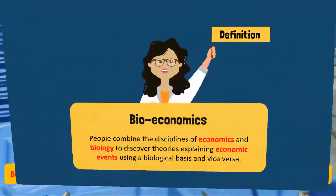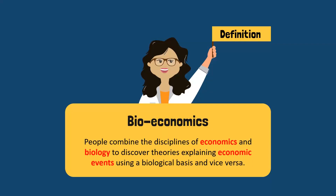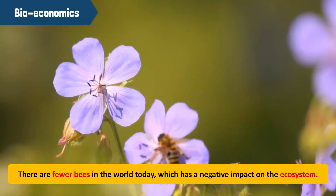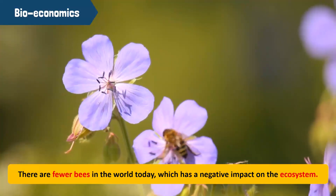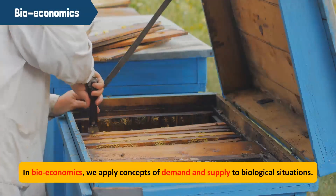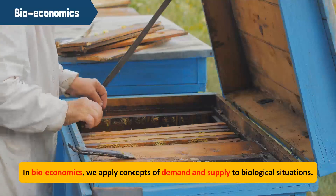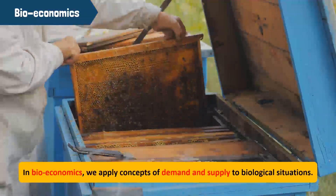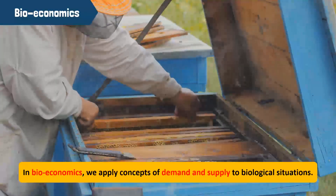Then there's bioeconomics. People combine the disciplines of economics and biology to discover theories explaining economic events using a biological basis and vice versa. For example, there are fewer bees in the world today, which has a negative impact on the ecosystem. In bioeconomics, we apply concepts of demand and supply to biological situations. In this case, the demand for bees in the ecosystem has increased and therefore we must find a way to sustain them.